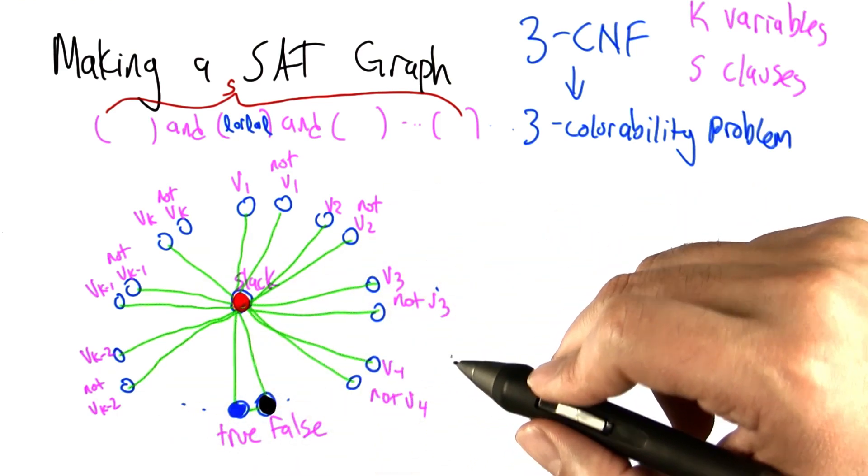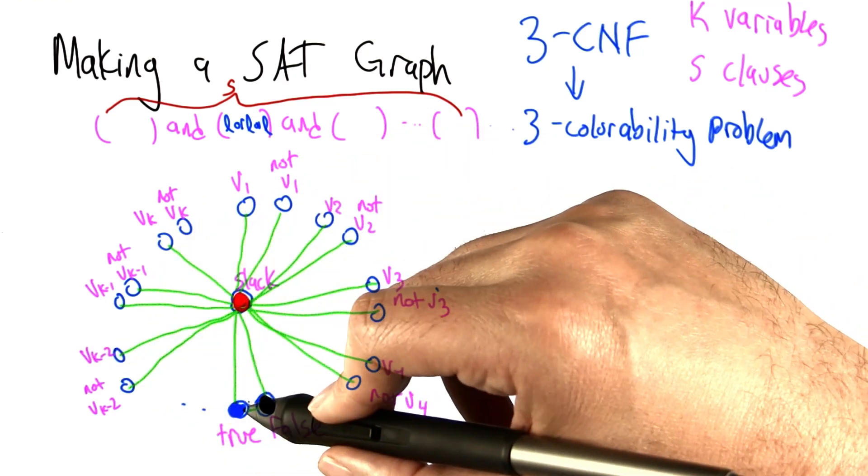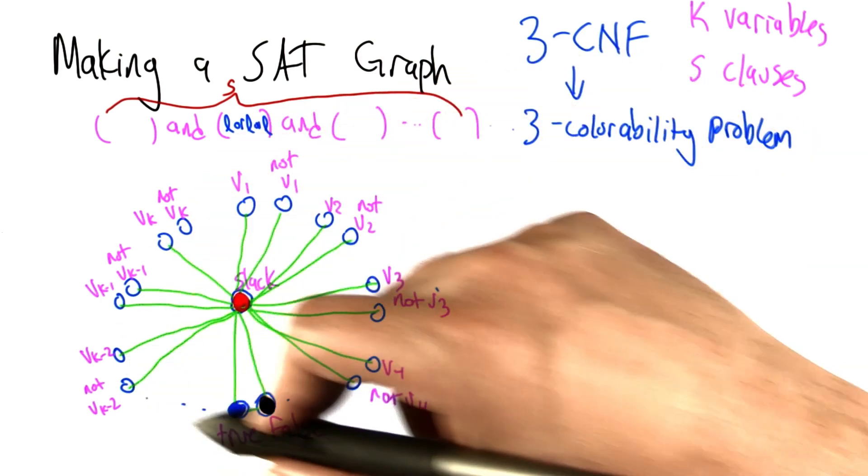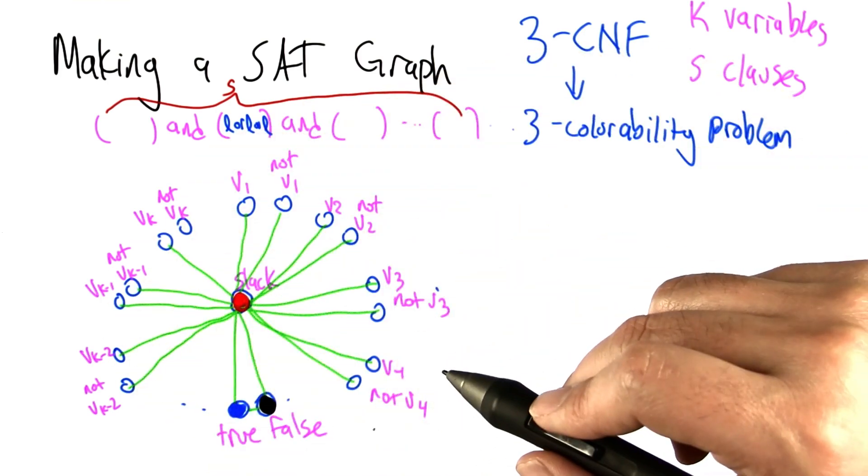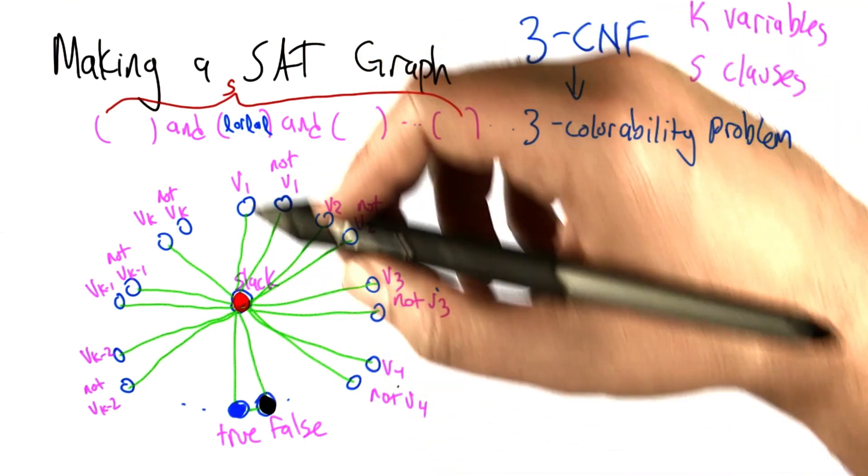All right, so the graph that we have so far has the property that each of these literals is going to have to be colored either true or false, blue or black, if we're going to 3-color the whole graph. So that's good, that kind of makes it seem like they're actually getting truth assignments.